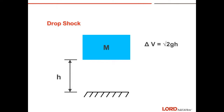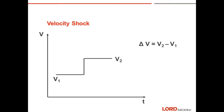Drop shock is also associated with the term 'oops' — it occurs when an object is dropped. The velocity change for a drop shock is a function of the height of the drop. The equation assumes that the package lands flat, not on a corner, and the impact is completely inelastic. Instances where it is a corner drop require different calculations and are more involved.